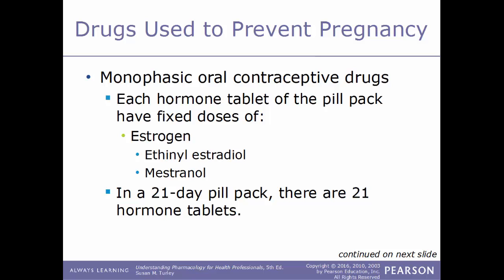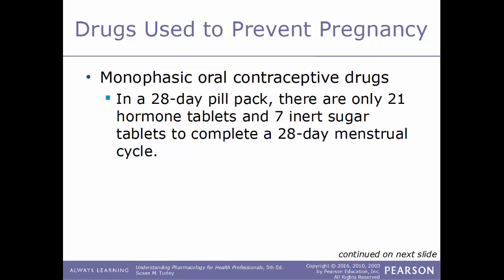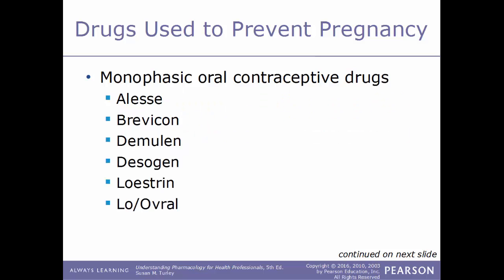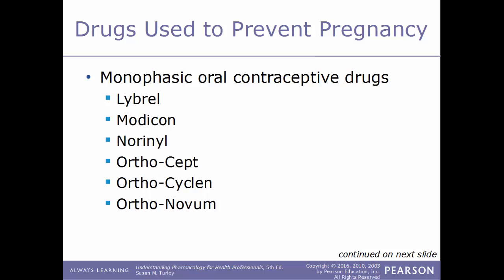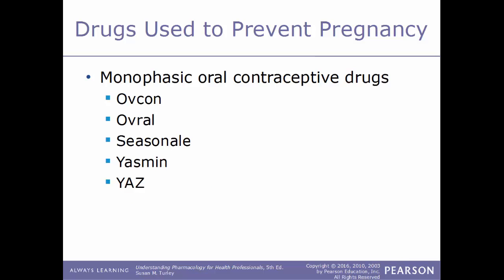Examples of monophasic oral contraceptive drugs include Brevicon, Demulen, Desogen, Loestrin, and Lo-Ovral. Others include Levlen, Modicon, Norinyl, Ortho-Cept, Ortho-Cyclen, and Ortho-Novum. Additional examples are Ovcon, Ovral, Seasonale, Yasmin, and Yaz.